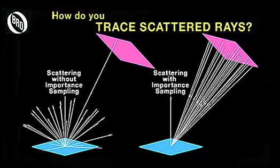ASAP NextGen automatically scales the power of the scattered rays, based on the BSDF assigned to the scattering surface. You get quantitative results based on a large sample of scattered rays in a reasonable amount of time.